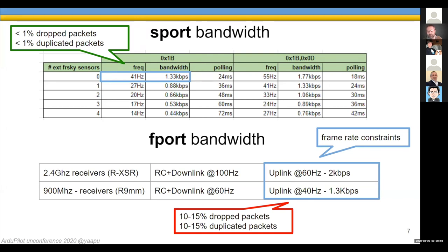There's another big difference: the quality of the link. In S-Port, which is more mature technology, packet loss is below 1%, so we hardly lose any packets. In F-Port, the situation is not as good — we have between 10% and 15% of dropped telemetry packets. Not RC control packets — just telemetry. And we also have quite some duplicated packets.